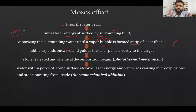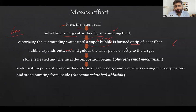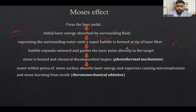Don't memorize — remember the concepts. The more energy that reaches the stone, the earlier the fragmentation and the faster the procedure. But in a pulsed laser, out of every pulse delivered, some energy is dissipated and wasted in water bubble formation to create a path to the stone. This whole problem is known as the Moses effect. Half of the laser pulse is lost in bubble formation due to the Moses effect.